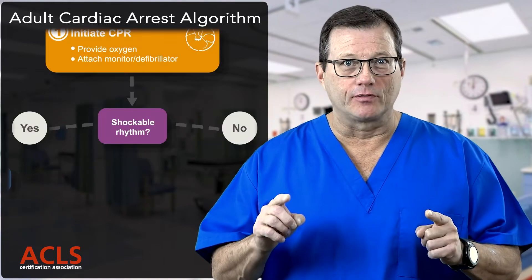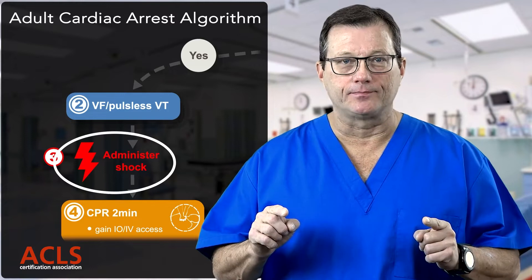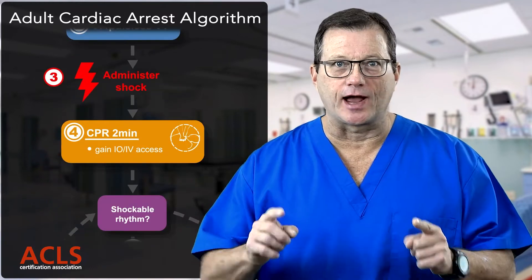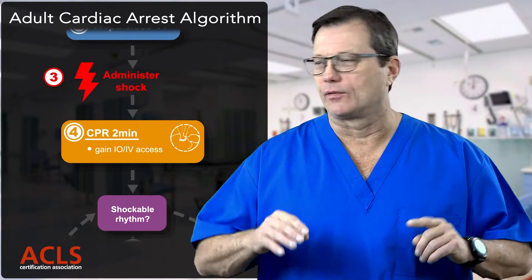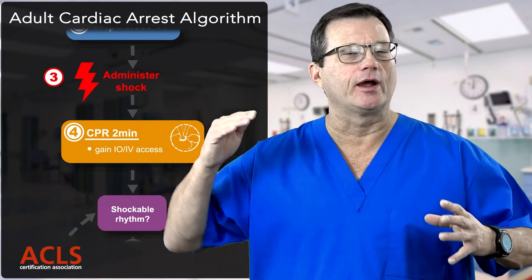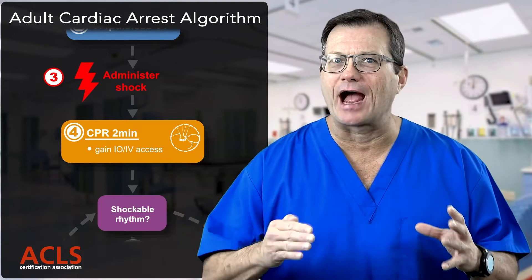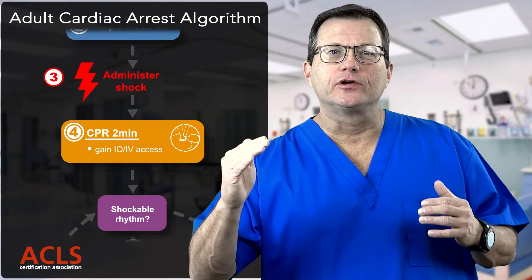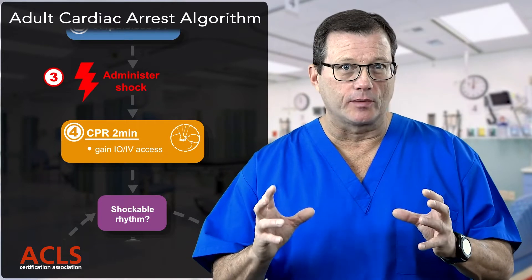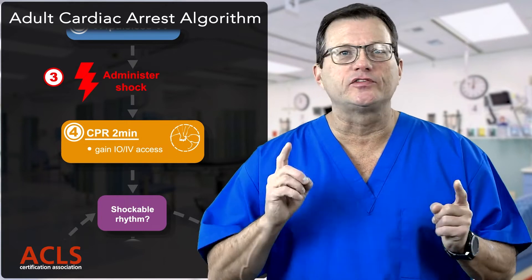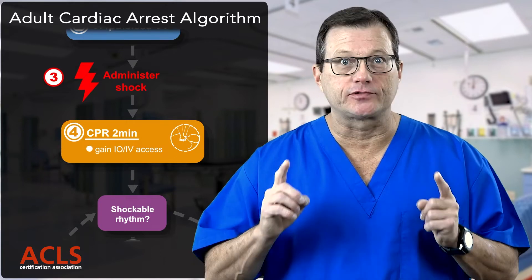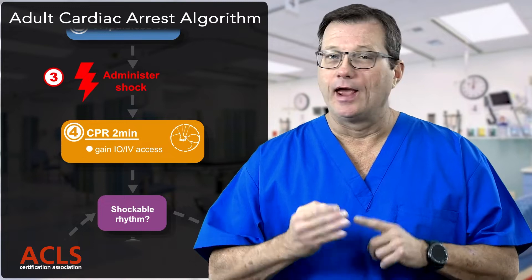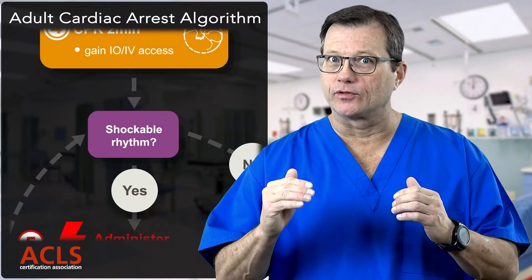If it's a shockable rhythm, administer the shock. Immediately after you administer that shock, resume chest compressions. We're not checking a pulse, we're not looking at the rhythm — we're going to get right back on the chest. Chest compressions for two minutes. During those next two minutes while you're performing chest compressions, our goal is to gain vascular access, either IV or IO. After two minutes, we reassess the rhythm.